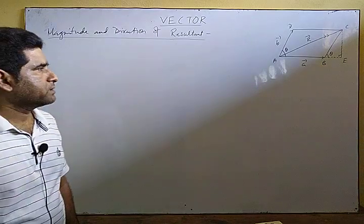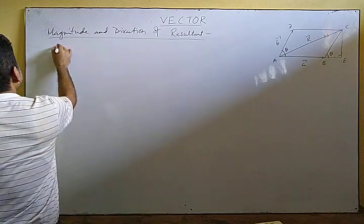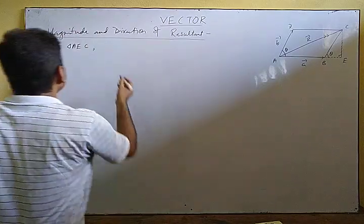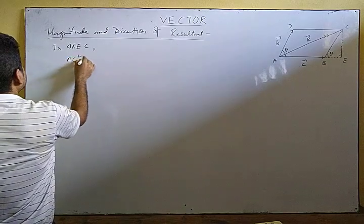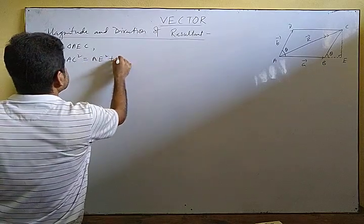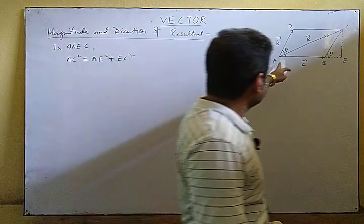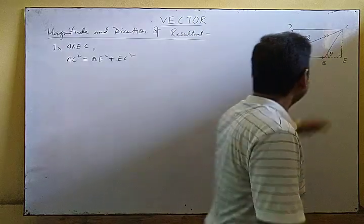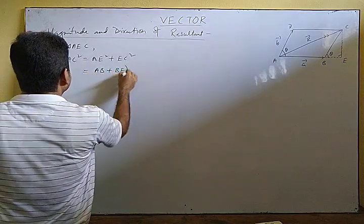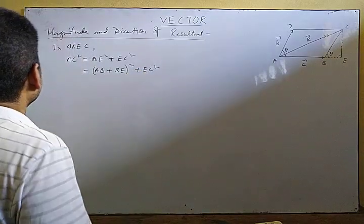In the right angle triangle AEC, applying the Pythagorean theorem: AC² = AE² + EC². Now, AE is equal to AB plus BE, so AE = AB + BE. Therefore AC² = (AB + BE)² + EC².